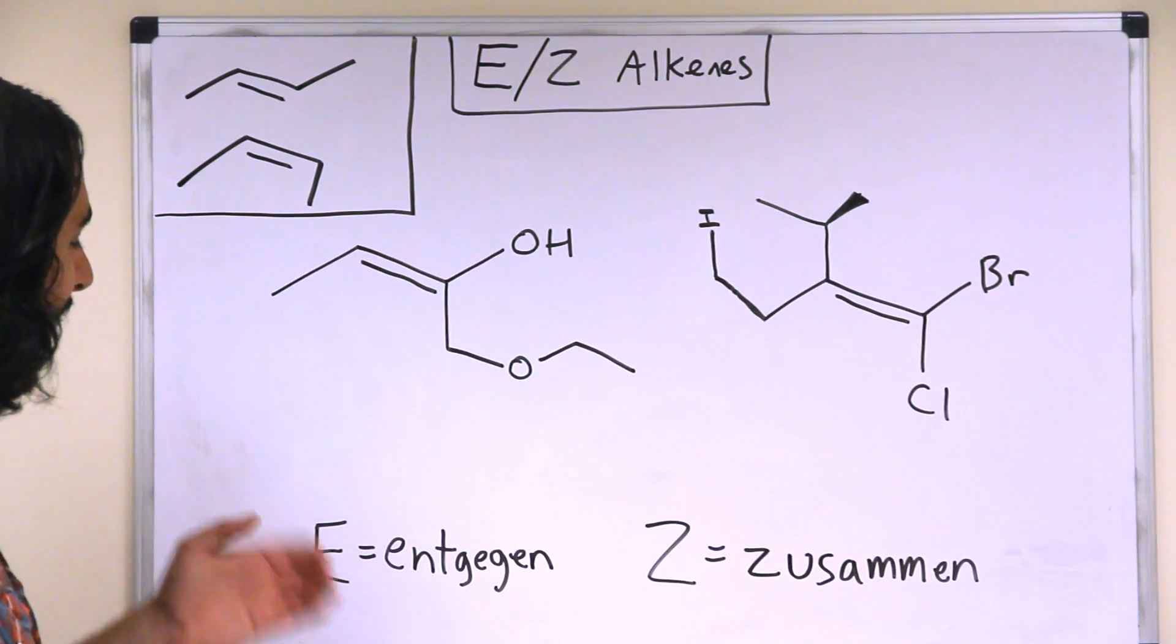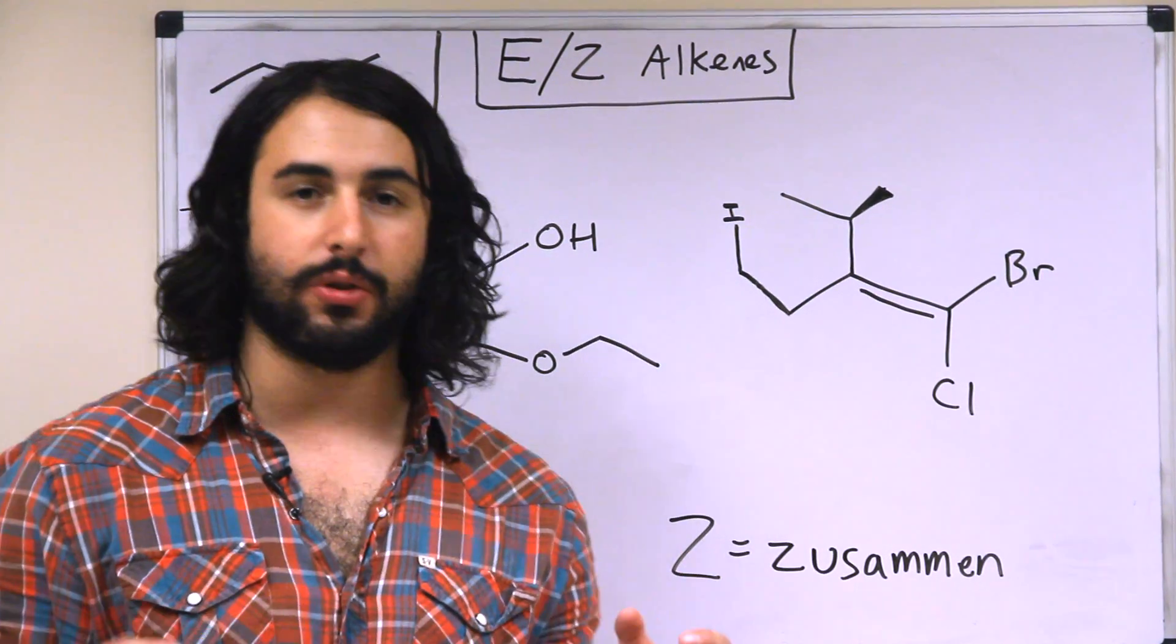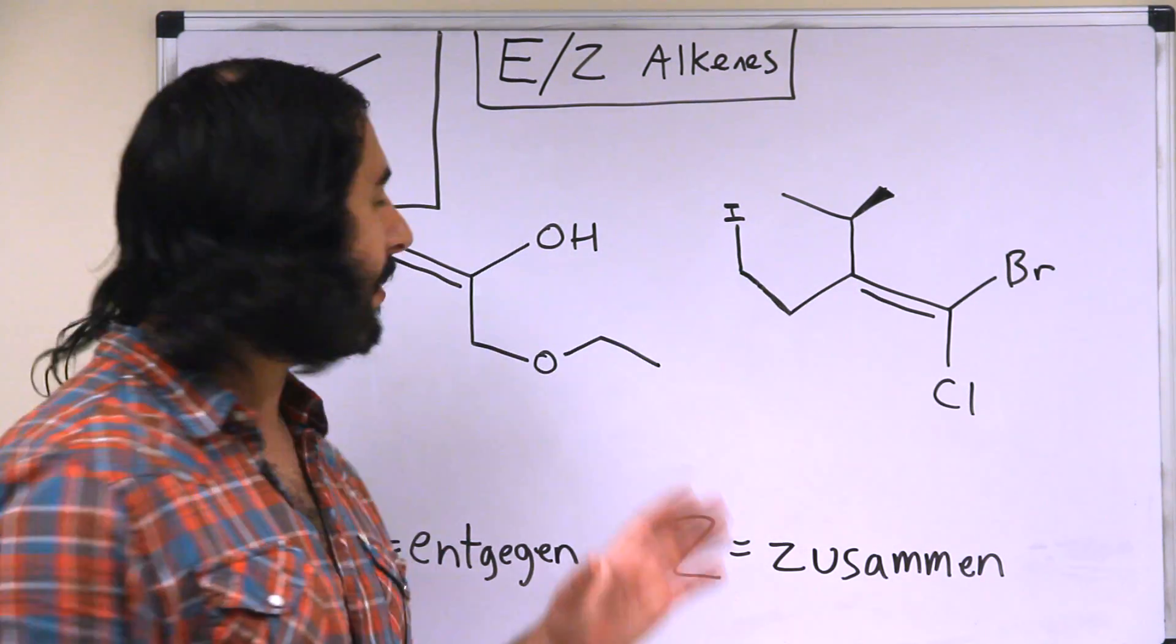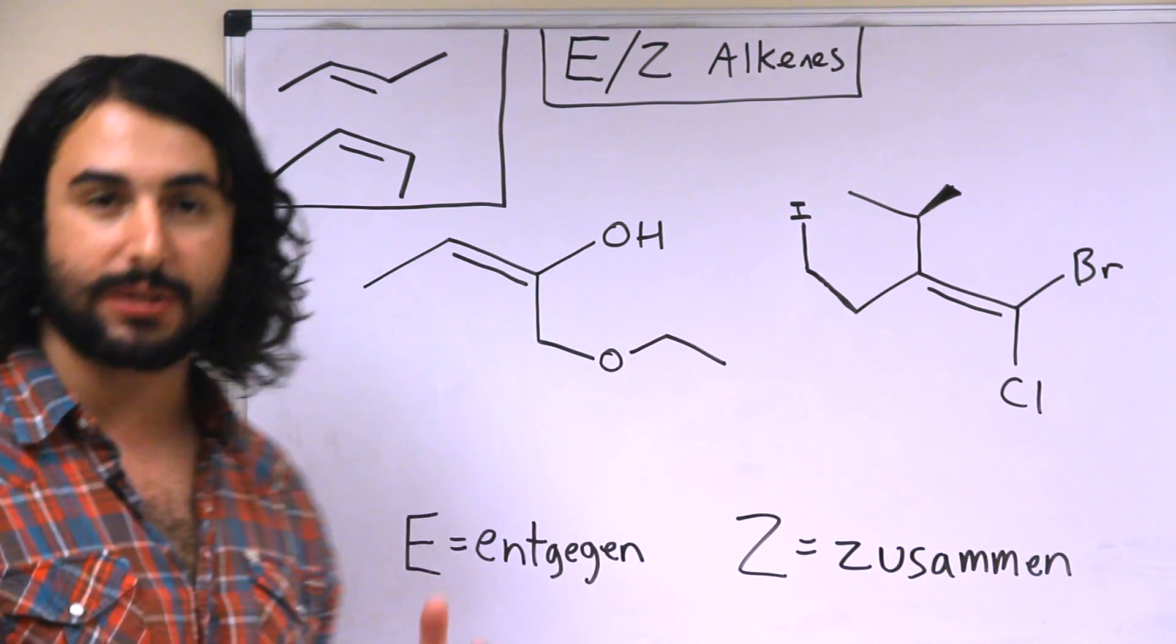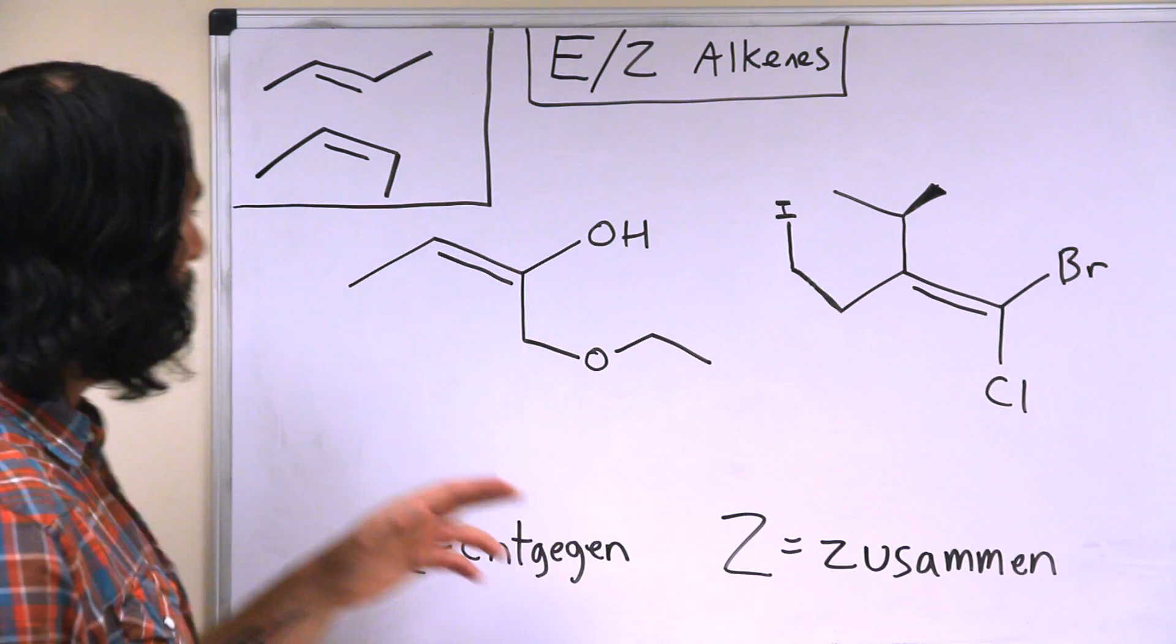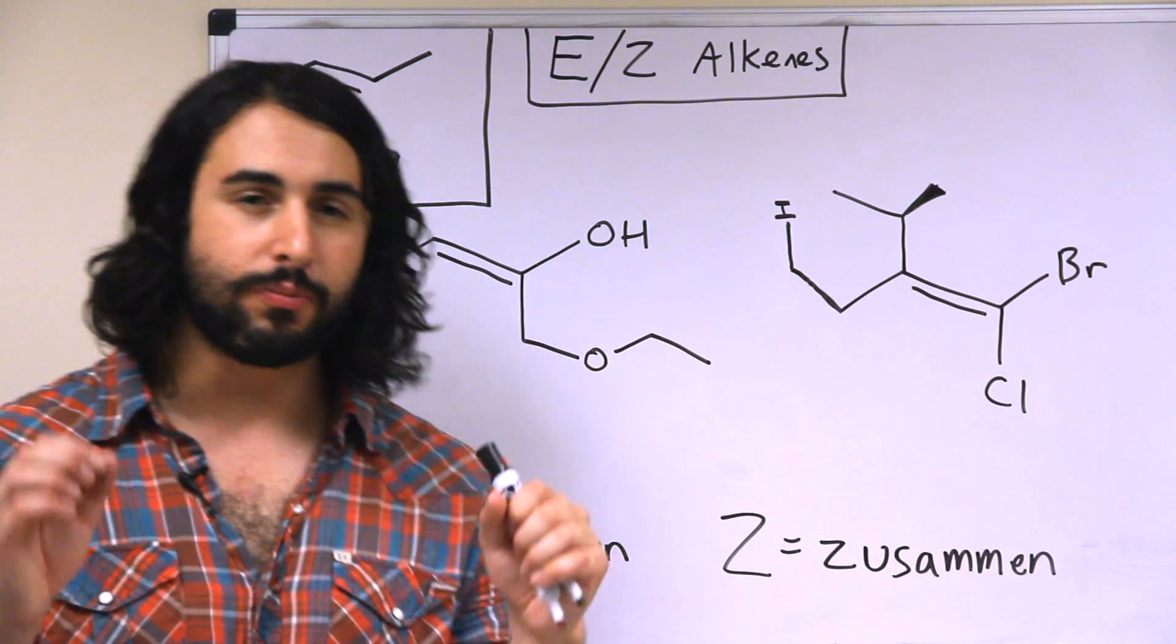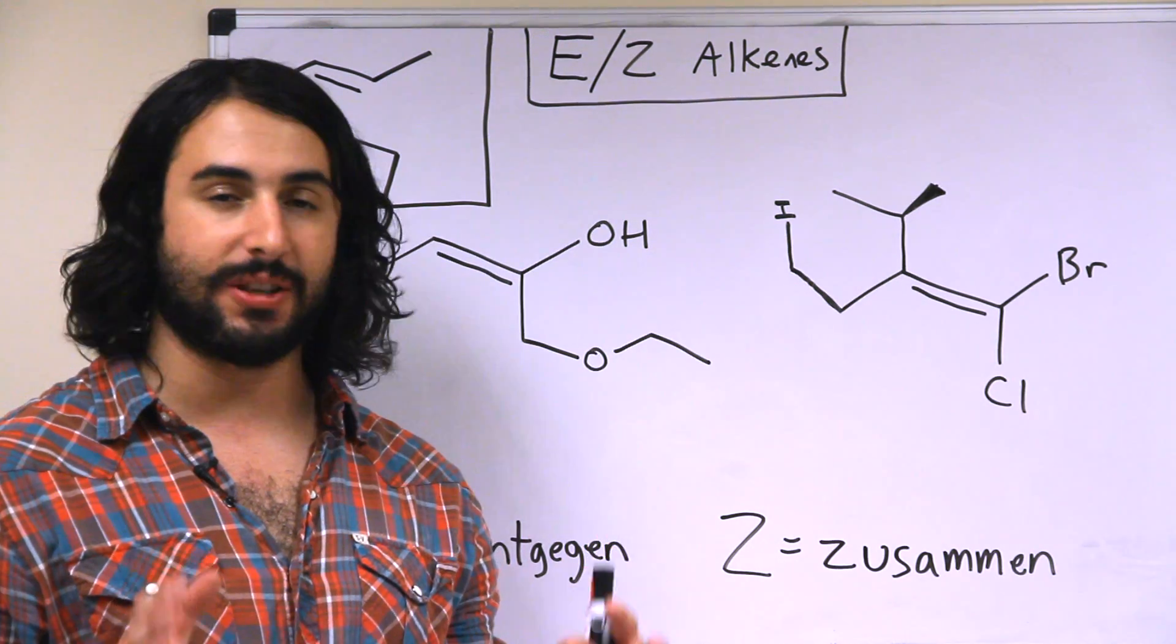So these are German words: E means entgegen and Z means zusammen, and this is referring to the highest priority groups on each side of an alkene being on the same or opposite sides. So basically we're looking at an alkene like this one, and this is one of the carbons and this is the other carbon participating in the double bond. Each of those two carbons has two of its own substituents. For example, on the left we have a methyl group and we have a hydrogen; on the right we have OH and then on the bottom we have this stuff.